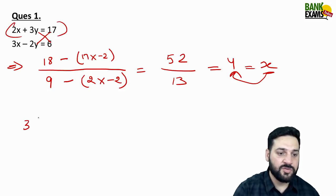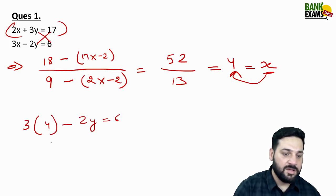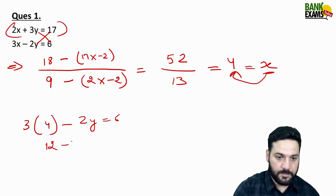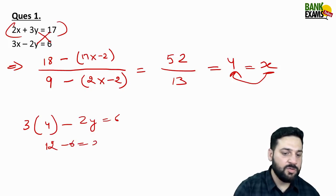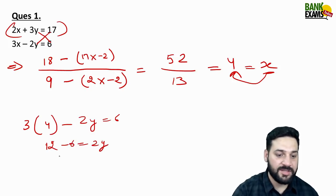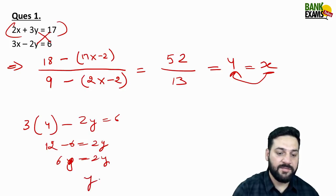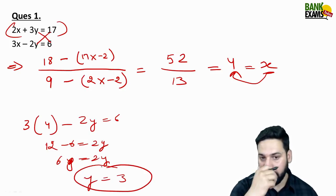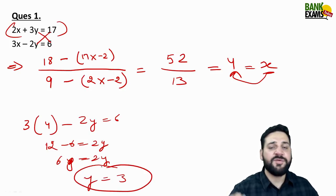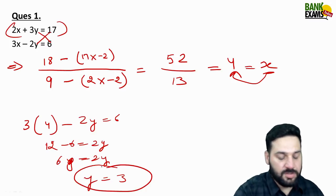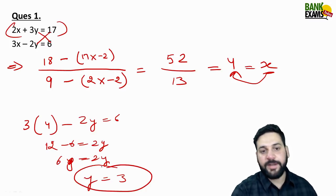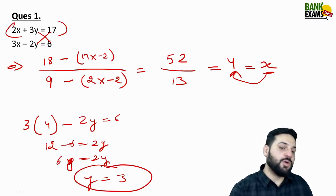To find y, just put the value of x into the equation. So 3 multiplied by 4 minus 2y = 6. You can do it in your mind — it's not difficult at all. The y value we got is 3.